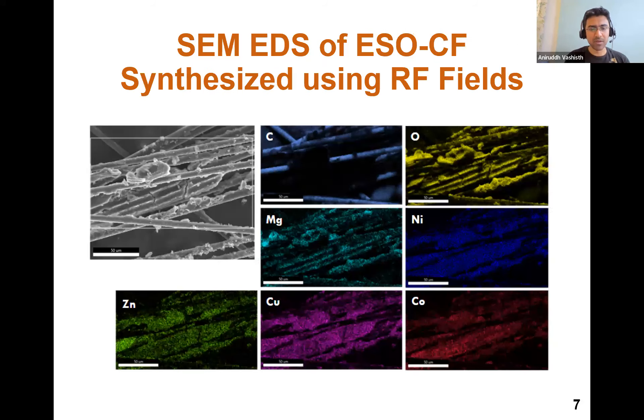We also made sure that the cations are uniformly distributed. So what you see here is that the magnesium, nickel, cobalt, copper, and zinc cations, which were the specific chemistry that we synthesized, are uniformly distributed all over these composites.